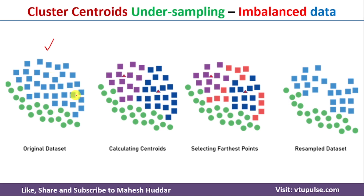The question is how to remove them. As explained, first we need to create clusters. In this case I have shown two clusters for the majority class, giving us two centroids. This is the first cluster with its centroid, and this is the second cluster with its centroid.